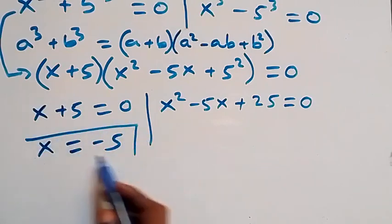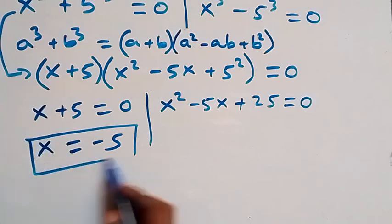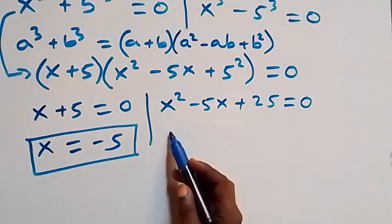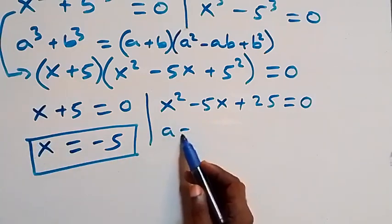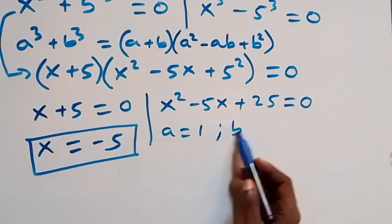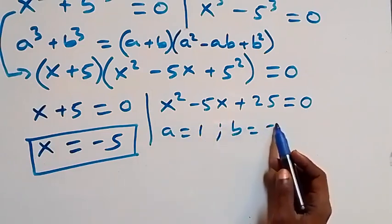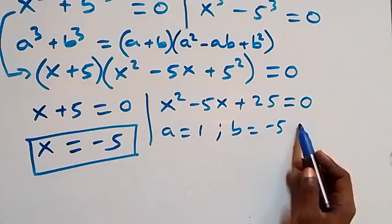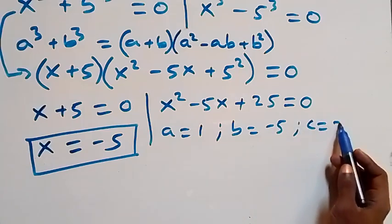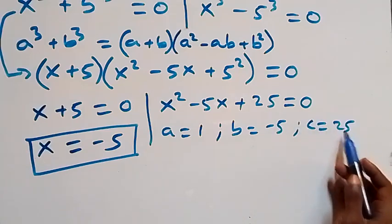x equals minus 5 is a real solution. For the quadratic factor x squared minus 5x plus 25 equals zero, we identify coefficients: a equals 1, b equals minus 5, and c equals 25.